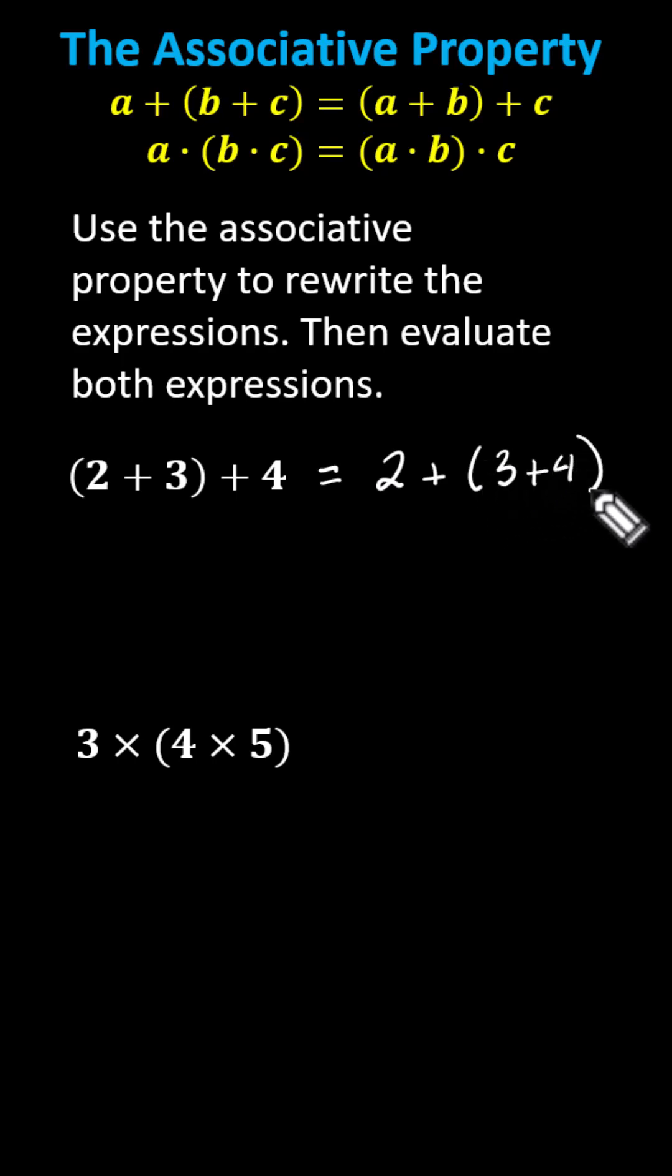And now to evaluate both expressions, following the order of operations we simplify inside the parentheses first. On the left inside the parentheses 2 plus 3 is 5. The left side simplifies to 5 plus 4.